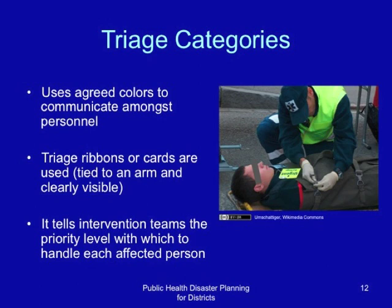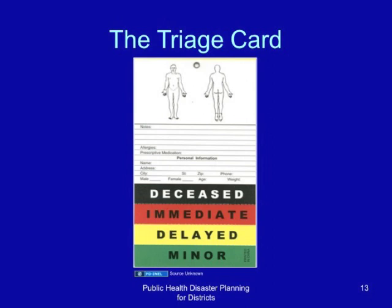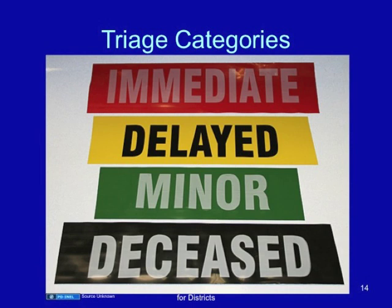This is an example of a color-coded triage card. Triage categories include those injured or affected persons that need immediate care, those that need delayed care, those that need minor care, and those that can be classified as deceased.